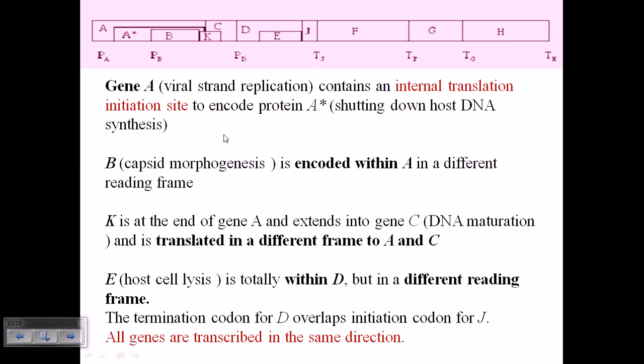Then there is a B gene which is called the capsid morphogenesis gene, and it is encoded within A. So you can see the B gene is encoded within the gene A.